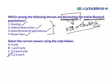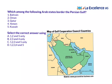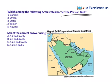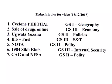The second question: which among the following Arab states border the Persian Gulf? Looking at the map, the Persian Gulf is bordered by countries like Kuwait, Saudi Arabia, Bahrain, Qatar, and UAE. Oman does not share a border with the Persian Gulf, so we remove that option. The answer is 1, 2, 3, and 5 — that is option C.